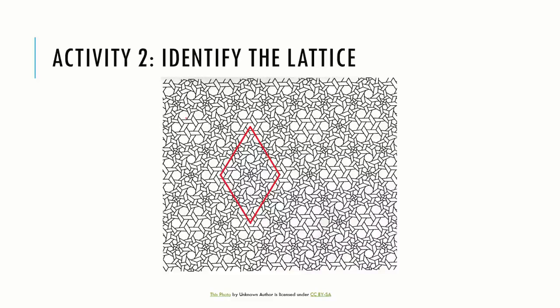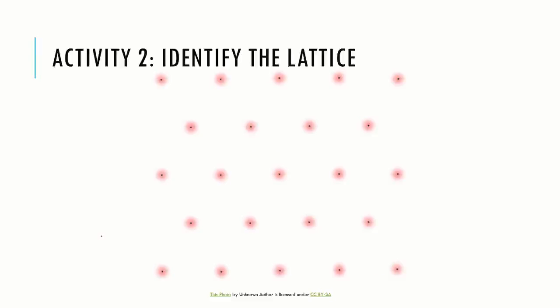Let us consider this complex pattern. What could be its lattice? Here, all points highlighted red are equivalent. Therefore, these represent lattice points.